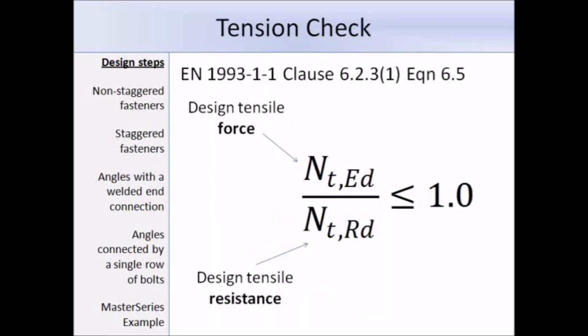The resistance of tension members is covered in clause 6.2.3 of Eurocode 3. To make sure that the resistance of the cross-section to an applied tension force is adequate, the following equation must be satisfied: N_t,Ed divided by N_t,Rd must be less than or equal to 1. This is expression 6-5, and it tells us that the design tensile force N_t,Ed must be less than the design tensile resistance N_t,Rd.